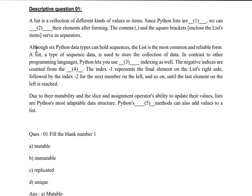Now let's understand the other lines. Let's move to the second paragraph. Although six Python data types can hold sequences, the list is more common and reliable form. A list is a type of sequence data used to store the collection of data. In contrast to the programming language, Python lets you use dash indexing as well. The negative indexes are counted from dash.